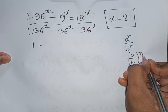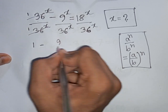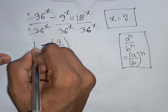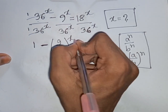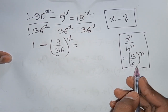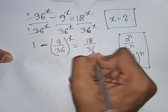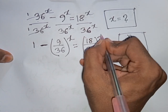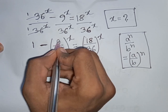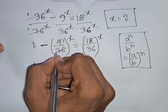According to this formula, we can write (9/36) to the power x is equal to (18/36) to the power x. Now, 9 divided by 9 gives 1, and 36 divided by 9 gives 4. Also, 18 divided by 36 simplifies to 1/2.